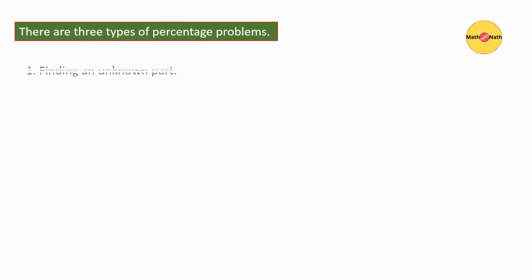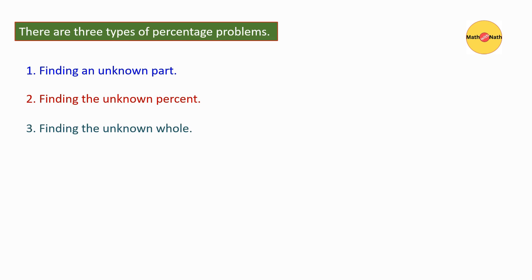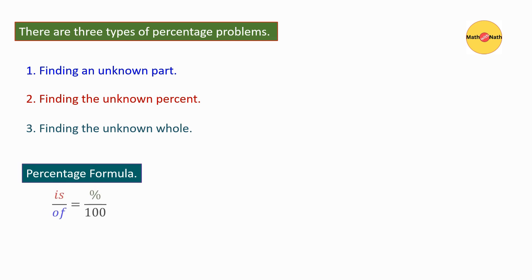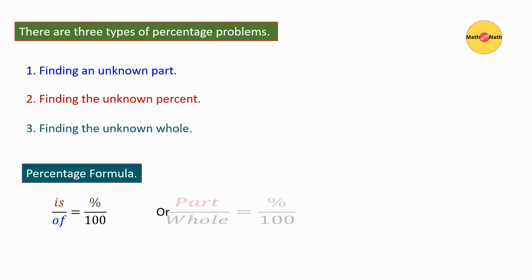There are three types of percentage problems: finding an unknown part, finding the unknown percent, and finding the unknown whole. The percentage formula is: is over of equals percentage over 100, or part over whole equals percentage over 100.